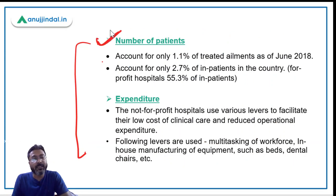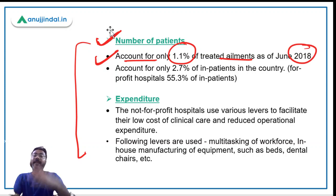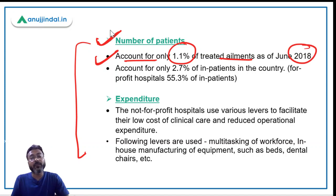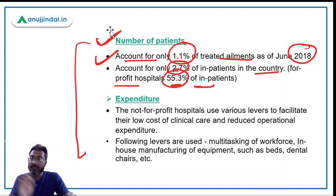Regarding patient numbers, not-for-profit hospitals account for only 1.1% of treated ailments as of June 2018. For inpatients, not-for-profit hospitals account for only 2.7%, while for-profit hospitals account for 55.3% of inpatients, with the rest going to government hospitals. Both for-profit and not-for-profit are types of private hospitals.